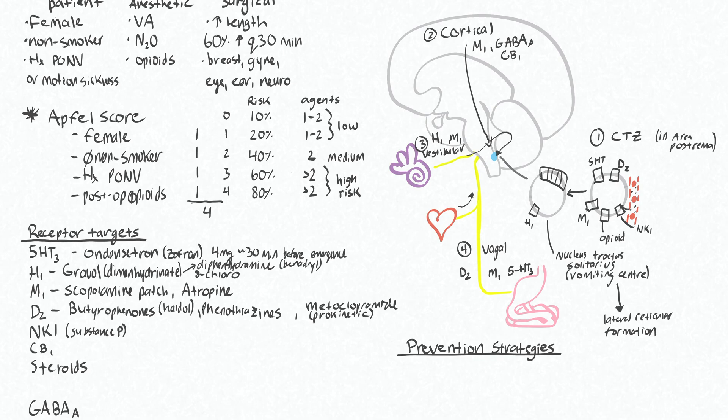These neurokinin 1 receptors, our medication for this is aprepitant, and our dosing is 40 to 80 milligrams PO and this has to be given pre-op. The major disadvantage with this is that it is rather expensive because it's one of our newer drugs. CB1 we don't use because they don't work.